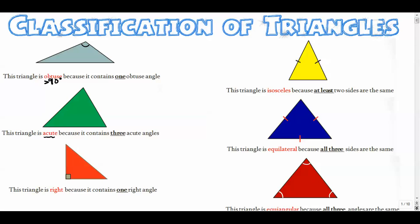This triangle is acute because all three of the angles are acute. So if they're all less than 90, then this triangle itself is called acute — not only are the angles acute, but the triangle is called acute. Notice in the obtuse triangle, the other angles are acute. That only requires one of the angles to be obtuse. If more than one angle is obtuse, it won't even close to create a triangle.